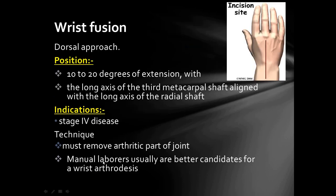Wrist fusion is done by dorsal approach with the incision in line with the third finger. Positioning involves 10 to 20 degrees of wrist extension with the long axis of the third metacarpal shaft aligned with the long axis of the radial shaft. It is indicated in Stage 4 disease, involves removal of the arthritic joint, and manual laborers are usually better candidates for wrist arthrodesis.